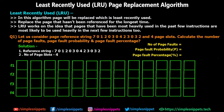Let's start off with today's topic and go through a little bit of theory before solving a numerical. In this algorithm, the page that will be replaced is the one that is least recently used. Another way to put it: we replace the page that hasn't been referenced for the longest time. In Optimal page replacement we looked ahead in time, but in LRU we look back in the past to find which page has not been referenced for the longest time.